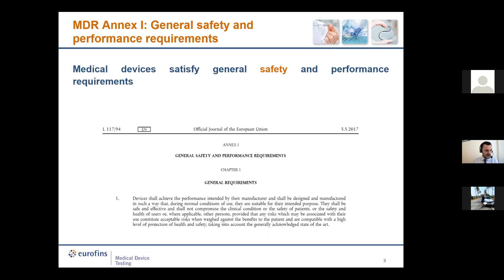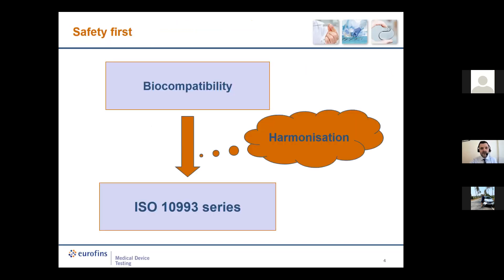The MDR also requires taking into account the compatibility between materials and substances with biological tissue, cells, body fluids — considering the intended purpose — and where relevant, absorption, distribution, metabolism, and excretion. The impact of the process on material properties must also be accounted for during the biological evaluation. When dealing with biocompatibility, we need a well-defined approach providing a scientific and robust proof, one that saves time and cost and is accepted by notified bodies and competent authorities. To perform this assessment, we rely on the ISO 10993 series.